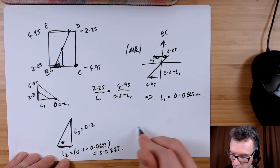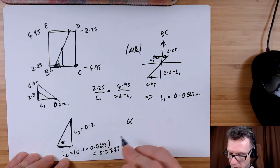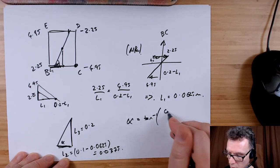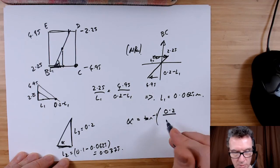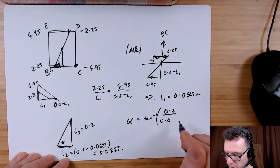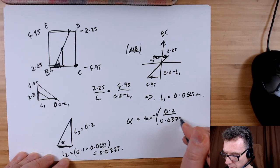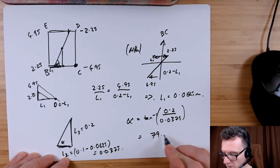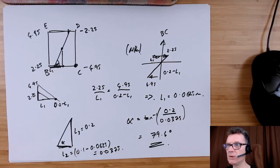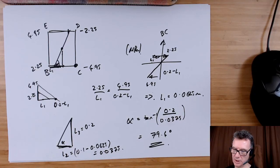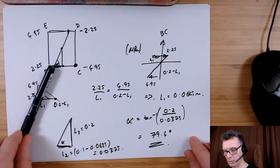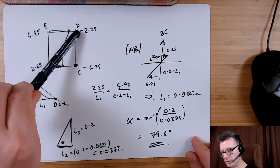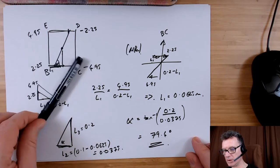So all I have to do then is say that the angle alpha is going to be arctan 0.2 divided by 0.0375. Stick that in my calculator and I get 79.4 degrees. So I know the start position from this base, and it's going to be the same length here, and I also know the angle.